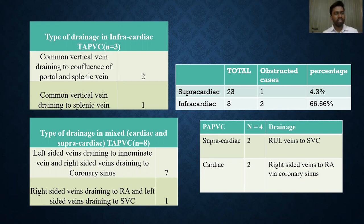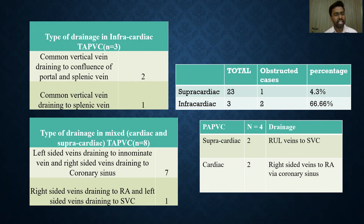In the drainage pattern of mixed TAPVC, left-sided veins draining to the innominate vein and the right-sided veins draining to the coronary sinus and in turn to the RA was the most common pattern, seen in 7 out of 8 patients of mixed TAPVC. Right-sided veins draining to the RA and left-sided veins draining to the SVC was seen in 1 remaining patient.